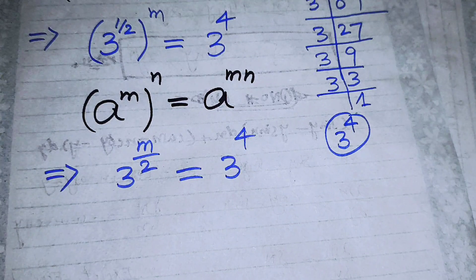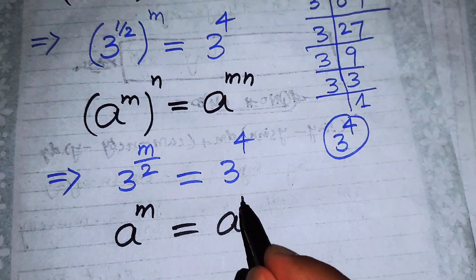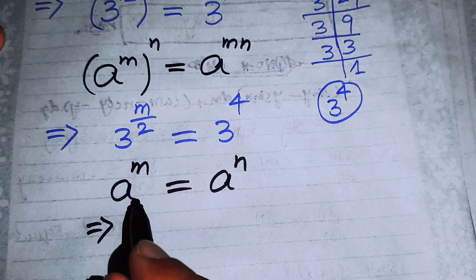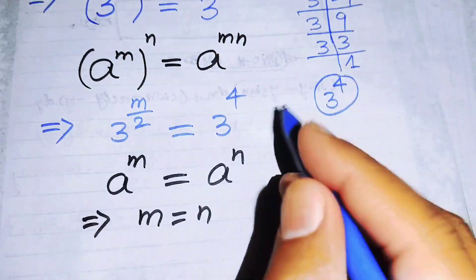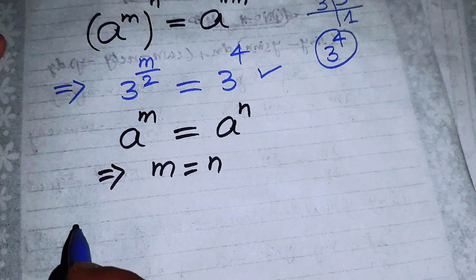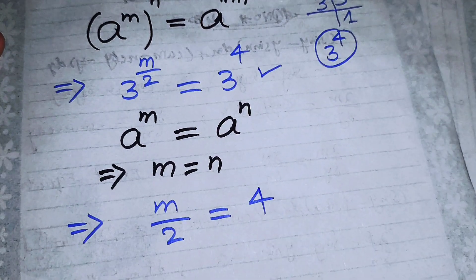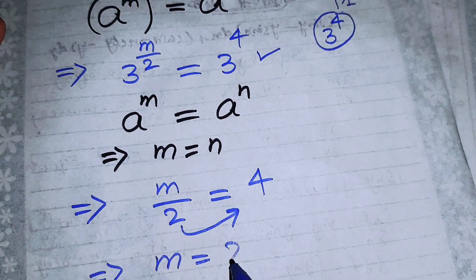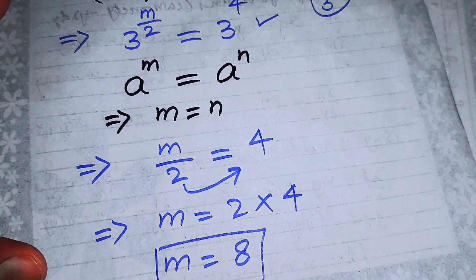We apply another exponent law: if a to the power of m equals a to the power of n, and the bases on both sides are the same, then m equals n. Since both sides have base 3, we get m over 2 equals 4. Moving the 2 to the right-hand side, we get m equals 2 times 4, so m equals 8.